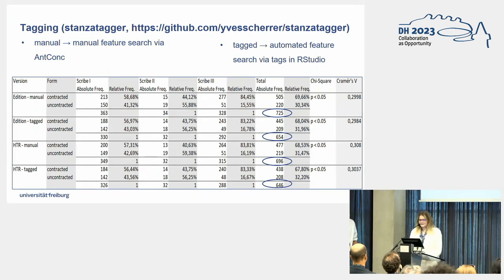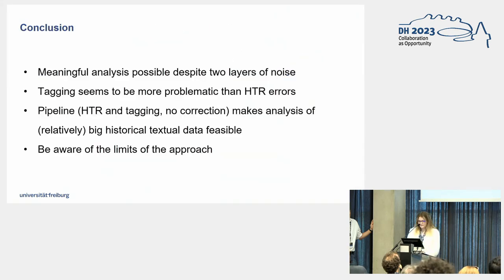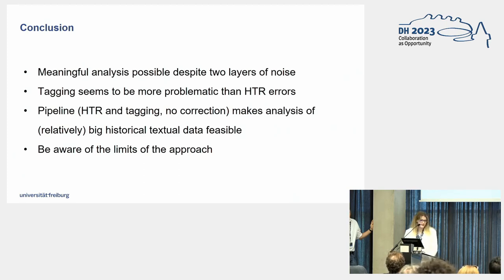When looking closer, the frequencies do not differ significantly. But the absolute feature hits for the tagged datasets were consistently smaller compared to the manual datasets, suggesting that errors produced by the tagger pose more challenges for feature search than HTR errors. To sum up: the combination of HTR and tagging seems more problematic, but overall the differences are very subtle. Statistical analysis using tagging results and HTR indicates that we can still provide robust statistical analysis, as far as our results go.